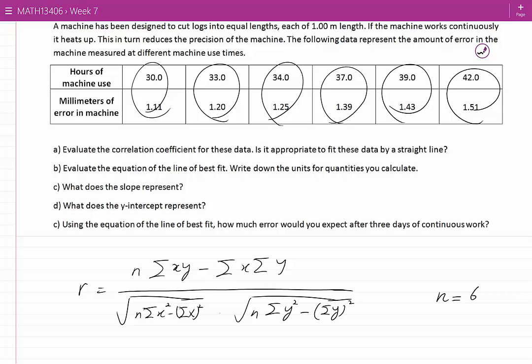Because we are interested in how many millimeters of error we would have after how many hours of time, we will call this row the y and this row the x. The other choice, that is calling the millimeters of error in machine x and the hours of machine use y, would also not be incorrect. But to make sense of things it would be easier to take the error as y and the time as x.